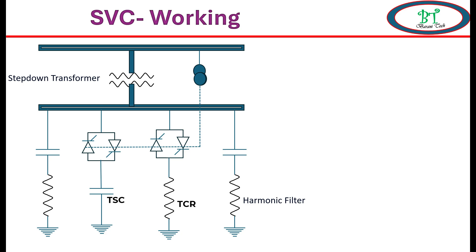Now we will see about the working of SVC. Let us consider there is a sudden loss in load. Due to this, the power factor leads during this time. Then the TCR will get switched on and reduce the power factor to normal. Once the power factor comes to normal, the TCR will get turned off.